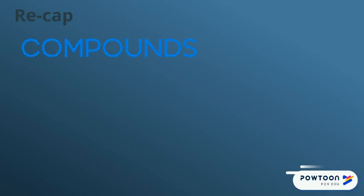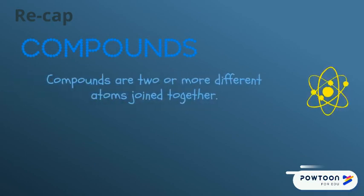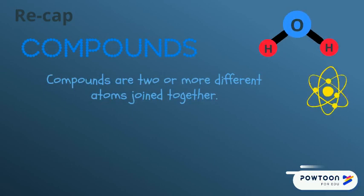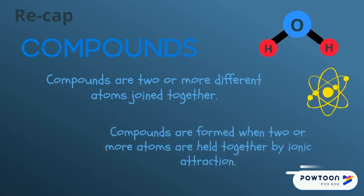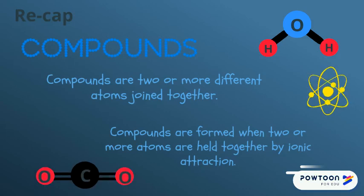Let's recap compounds. Compounds are made out of atoms. Compounds are made when two or more different atoms are joined together, held together by ionic attraction.